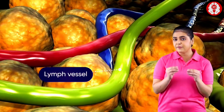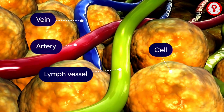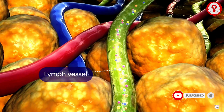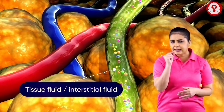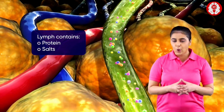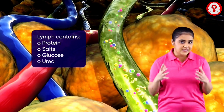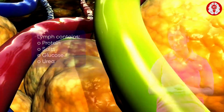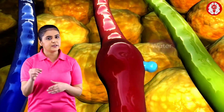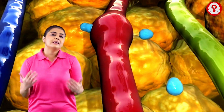A closer look at the lymphatic system shows the lymph vessels along with the arteries and the cells. If we take a look inside the lymph vessels, we can see that it carries the lymph — a clear watery fluid that contains protein molecules, salts, glucose, urea, and other substances — throughout the body.